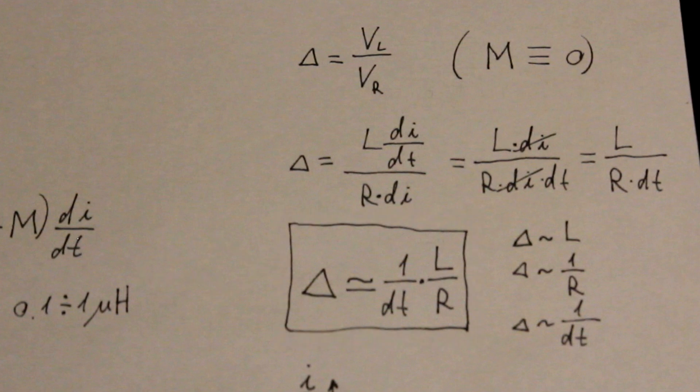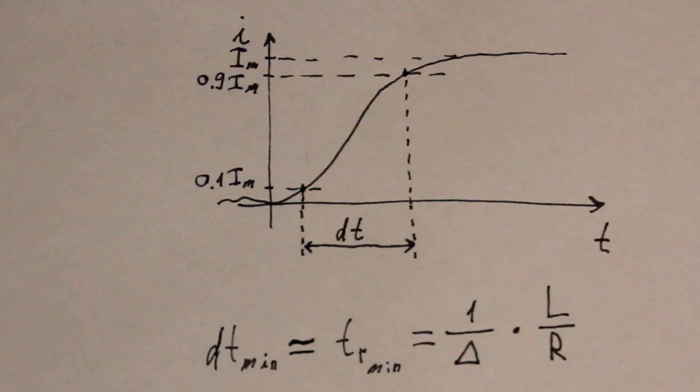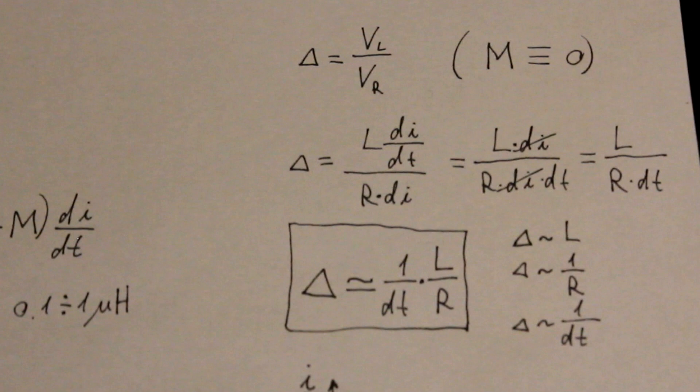Increasing R itself reduces the error, which is logical. The large useful signal R times di can still overwhelm the inductive error. dt can be taken approximately as the expected rise time of the signal at the 0.1, 0.9 levels. Of course, this simple formula doesn't represent true time-dependent error function, but it can tell you how well a shunt will perform for a given pulse.